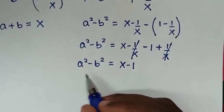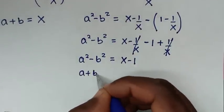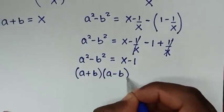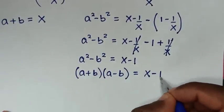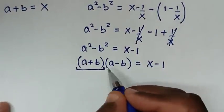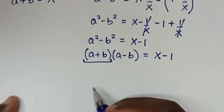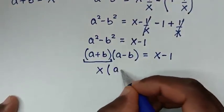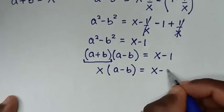This is a difference of squares, so a squared minus b squared equals (a plus b)(a minus b), which equals x minus 1. From our first equation, a plus b is equal to x. Substituting x in, we get x times (a minus b) equals x minus 1.